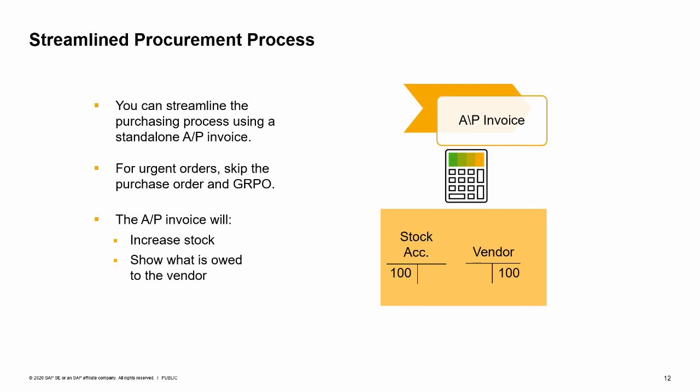Rather than creating a goods receipt PO, you enter an AP invoice to process both the receipt of the items into inventory and the obligation to pay the vendor. In this case, when you directly post the AP invoice without first creating a goods receipt PO, the postings to the allocation cost account are omitted.